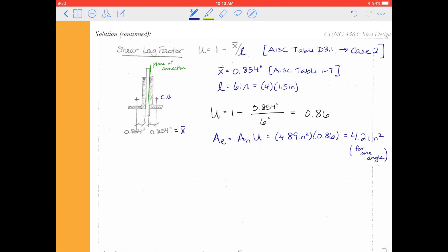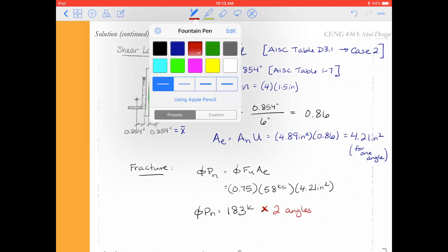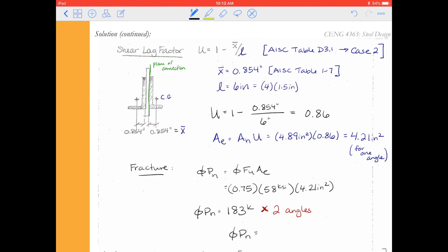Alright, we can run through our calculations. So our final design calculation, we say for fracture, we're going to check that φPn is going to be φ times Fu times Ae. Our reduction factor is 0.75. Fu, we already said, was 58 ksi for an A36 steel. And our effective area is 4.21 inches squared. So we get φPn to be a total of 183 kips. We have to multiply that. Again, let me put this in red. We have to multiply this by two angles. And so our total possible load that this could handle for two angles is going to be 366 kips.